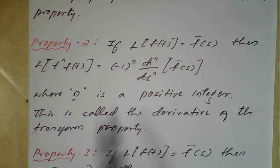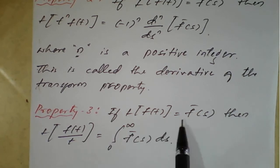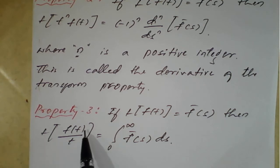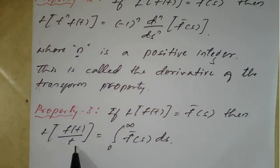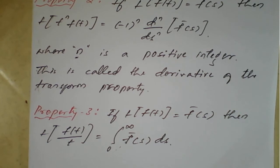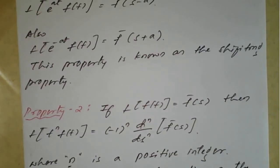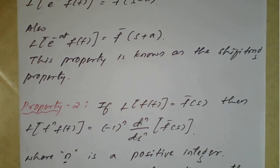The third property: if L{f(t)} = F(s), then the Laplace transform of f(t) divided by t is integration — specifically, integration from 0 to infinity of F(s) ds. When divided by t it is integration; when multiplied it is differentiation. We apply the upper and lower limits to get the result. These three properties are very important to solve examples based on Laplace transform. We will now see the examples.